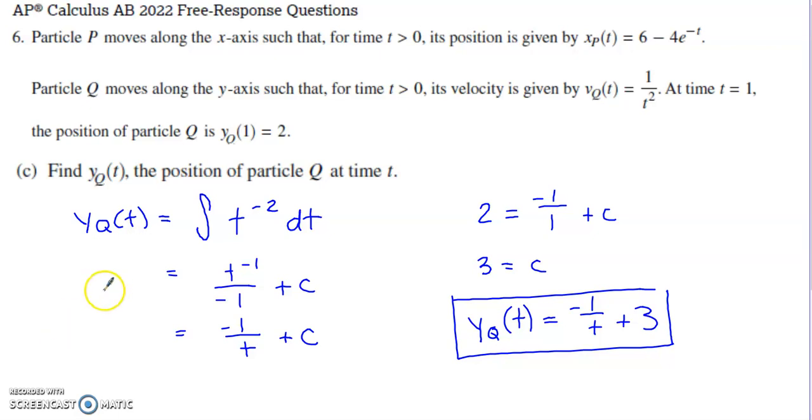Part C asks us to find the position function for particle Q. We have access to the velocity function for particle Q. This is the rate of change of position or the derivative of position. If we want to work backward to a position function, we're going to have to do an antiderivative. I thought of 1 over T squared as T to the negative second. I applied my power rule for antiderivatives or integrals. I do have to tack on my constant of integration. I cleaned it up a little bit to make it easier to deal with this condition.